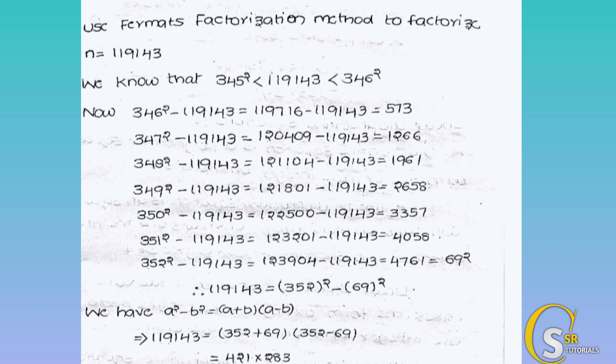Next, try 349: 349 squared minus n equals 2658 — not a perfect square. Then 350: 350 squared minus n equals 3357 — not a perfect square. Then 351: 351 squared minus n equals 4058 — also not a perfect square.